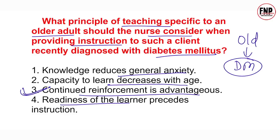Jaise jaise kisi bhi person ki age badhti hai, neurons purane hote jaate hain, neurological aging ho jaati hai. Aur neurons ke old hone ke kaaran, un persons mein forgetfulness jaisi condition dekhne ko milti hai — yaani unki yaadaasht kamzor hone lagti hai aur wo slow response dene lagte hain. So for patient teaching, we repeat and repeat the instructions to get a good response.